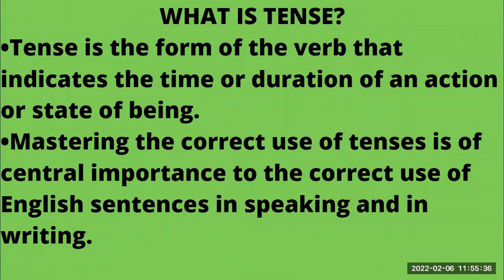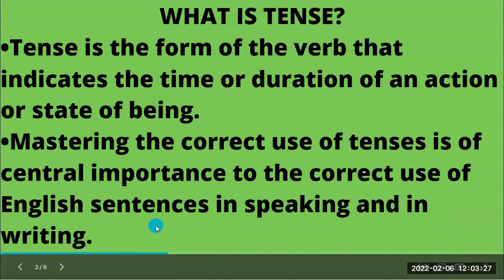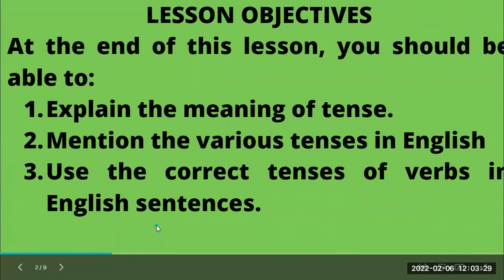What exactly is tense? Tense is the form of the verb that indicates the time or duration of an action or state of being. Mastering the correct use of tenses is of central importance to the correct use of English sentences in speaking and in writing. When you understand the correct use of tenses, it enables you to speak and write correctly.